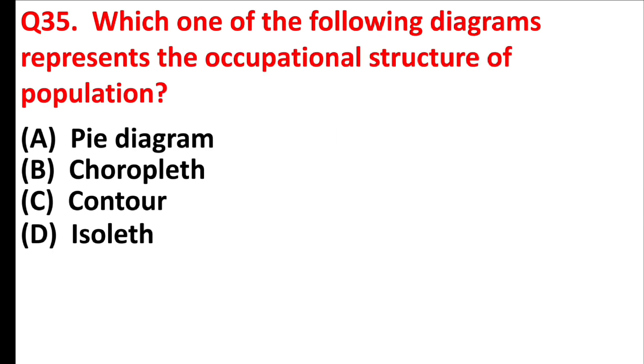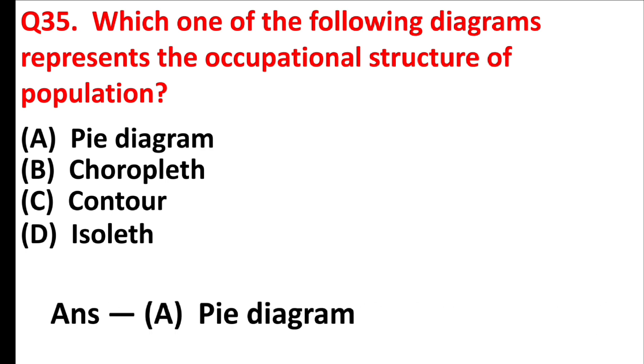Which one of the following diagrams represents the occupational structure of population? Answer is option A: pie diagram.